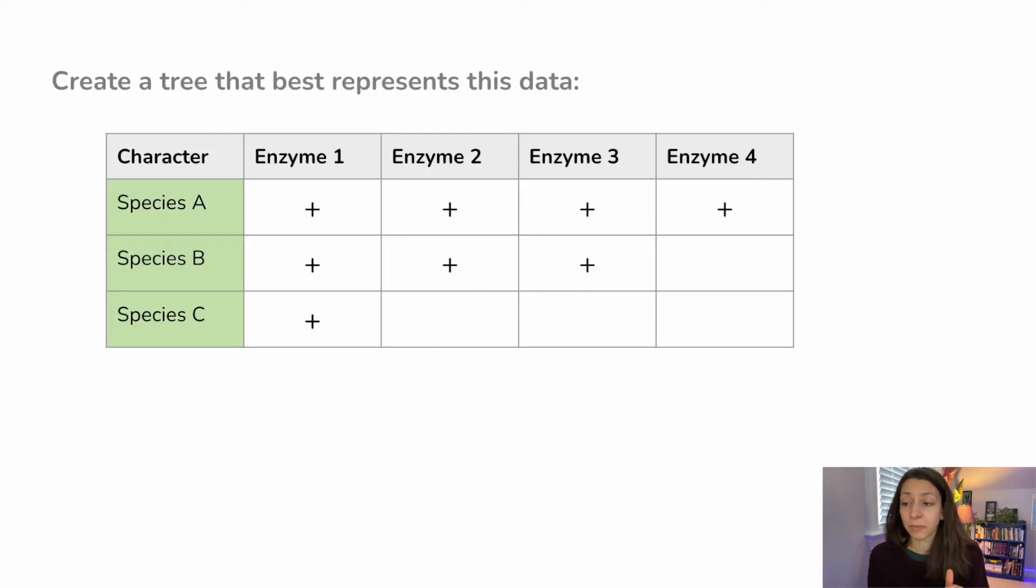Now we just have some enzymes. We're comparing the similarities between organisms based on these enzymes that appear and whether or not they are in each organism. We have four enzymes and three different species. So go ahead and create an evolutionary tree based on this data. When you're ready.